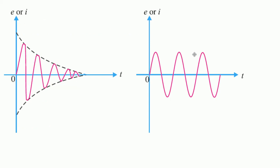Let's refresh about what is meant by undamped oscillations and damped oscillations. On the left side is the damped oscillations and on the right side is the undamped oscillations. In damped oscillations, it initially has a considerable amount of magnitude and eventually reaches towards zero, whereas in undamped oscillations, the waveforms continuously have the same magnitude and frequency for an indefinite amount of time.